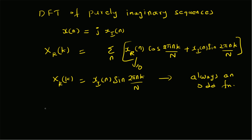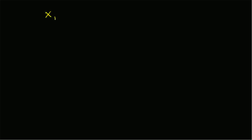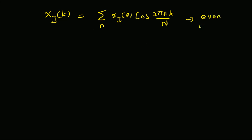Now let us look at the imaginary part of the DFT. x_i of k is given by the definition: summation over n of x_r of n times sin(2πnk/N) minus x_i of n times cos(2πnk/N). Since x_r of n is 0, the first part is gone and we are left with: x_i of k equals summation over n of x_i of n times cos(2πnk/N). This imaginary part is always an even function with respect to k.